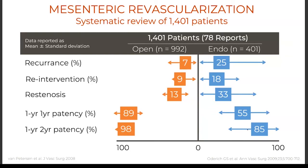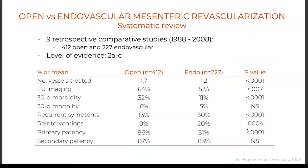Unquestionably, mesenteric stenting has a higher recurrence rate, higher re-intervention rate, more in-stent restenosis, and lower primary patency — although secondary patency can be quite good. A systematic review in the Journal of Vascular Surgery with nine retrospective papers showed no difference in mortality or morbidity for the revascularizations, but endovascular was associated with more recurrent symptoms, more re-interventions, and lower primary patency.